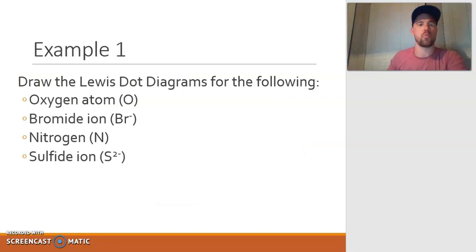Alright, so let's take a look at example 1. In example 1, we are asked to draw the Lewis dot diagram for the following. We have 2 examples of neutral atoms, and then we have 2 examples of ions. So let's take a look at the oxygen atom. The first thing we want to do is write out the element symbol. Oxygen is O.